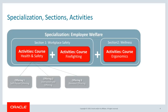A specialization contains multiple courses grouped together as a single entity to help learners achieve a learning goal that a single course cannot provide. Think of a specialization as a curriculum or learning path. A specialization is made up of sections, and sections have activities that point to existing courses from the catalog.